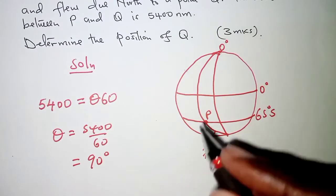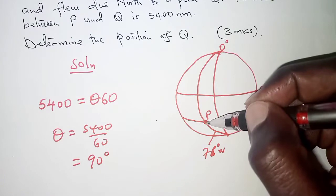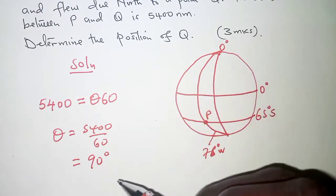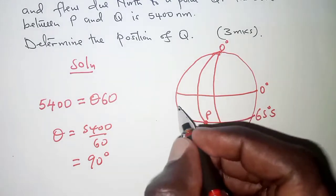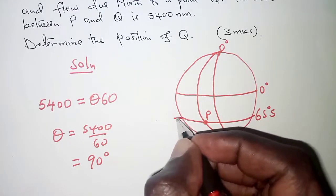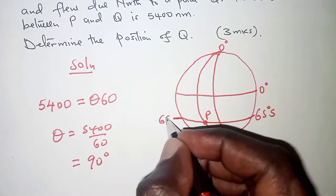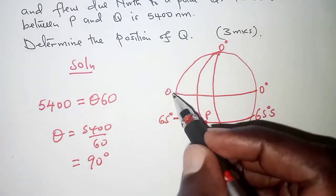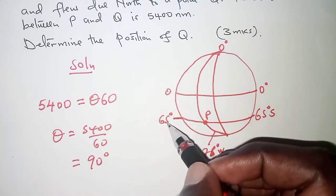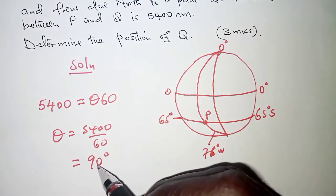What that means, when the plane flies from point P to Q, it moves a total of 90 degrees. As we can see, this latitude here is 65 degrees south of equator. And equator is at 0 degrees. So when you move from 0 to 65, that is still less than 90.